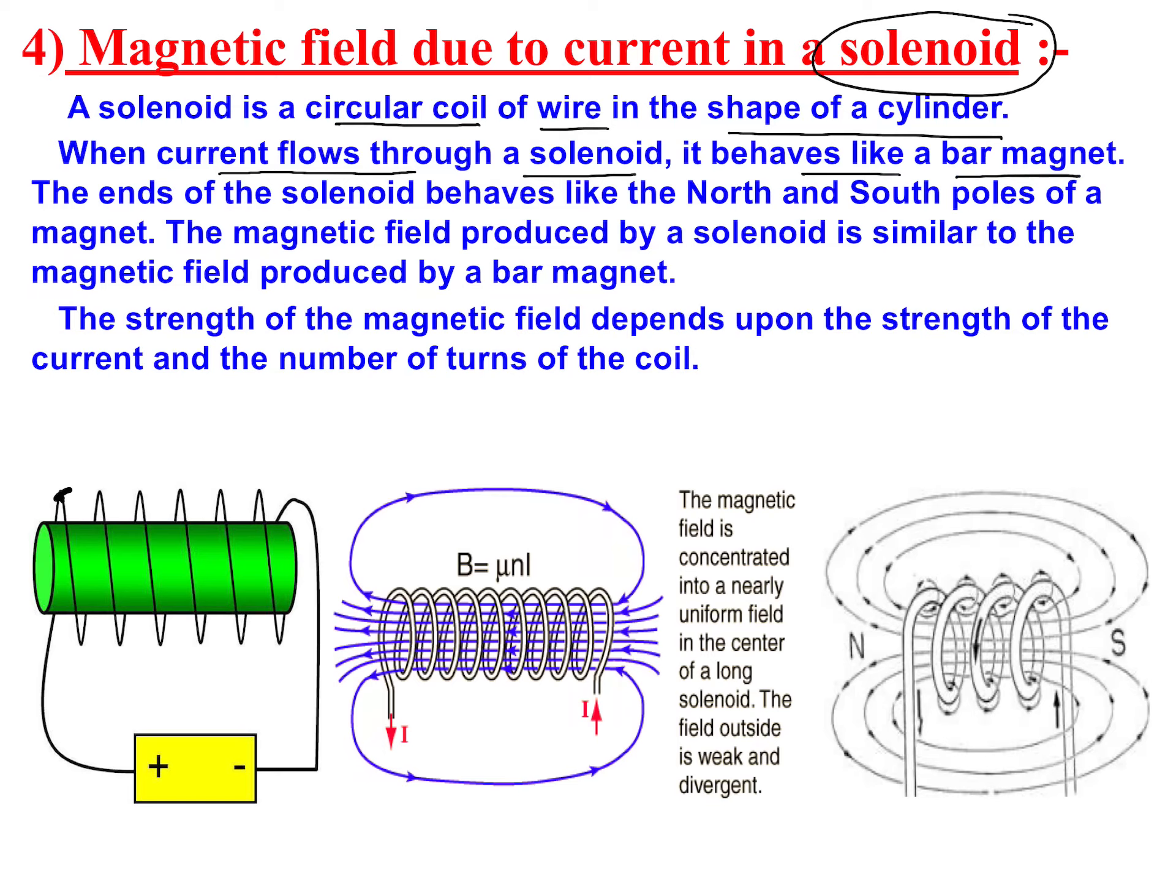Solenoid has multiple turns. It behaves like a straight conductor, then we had a single loop, now we have multiple loops. So it will be a very strong magnet.